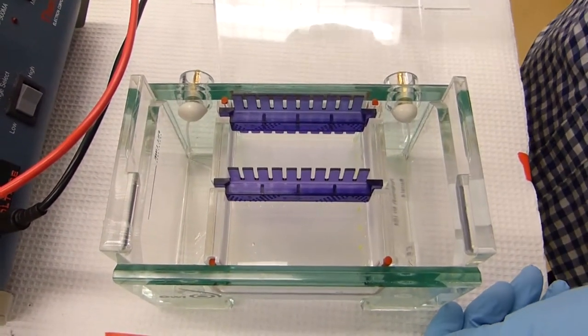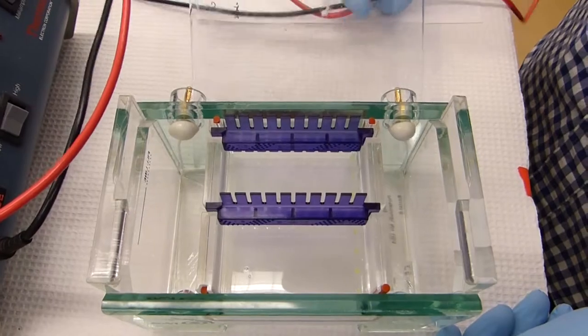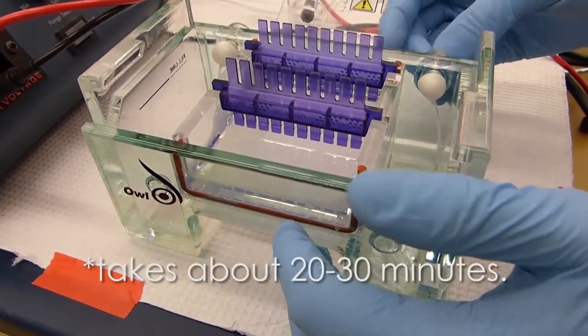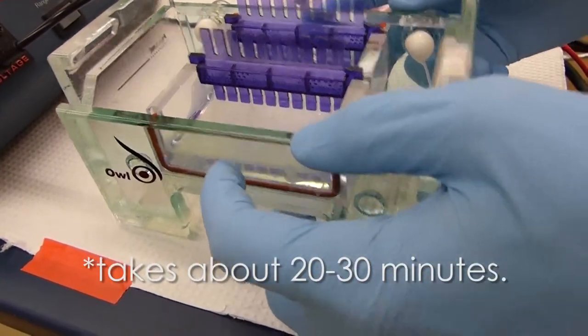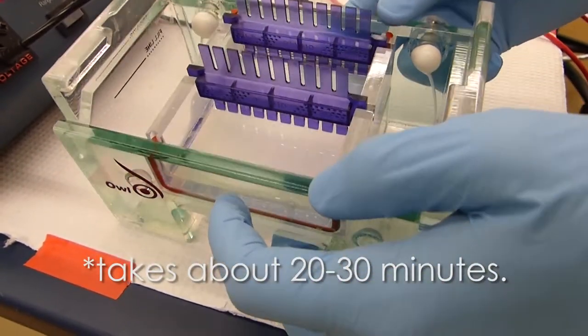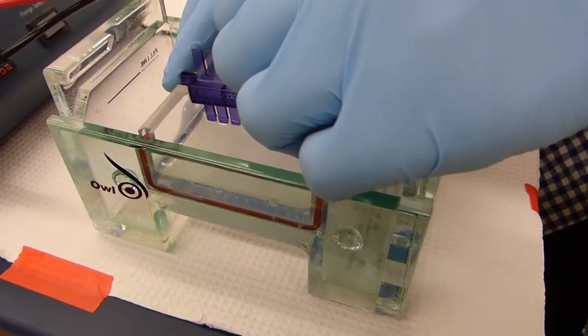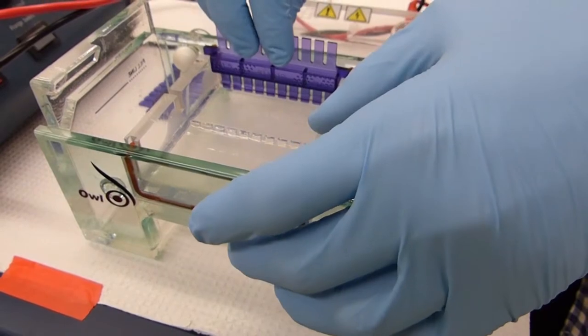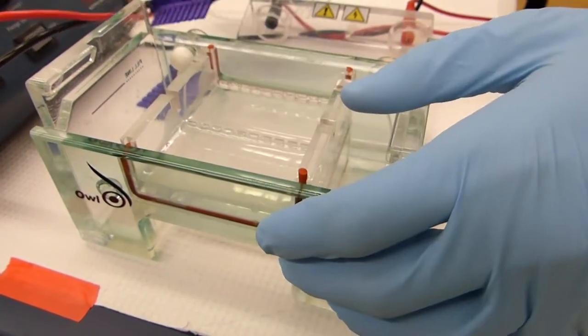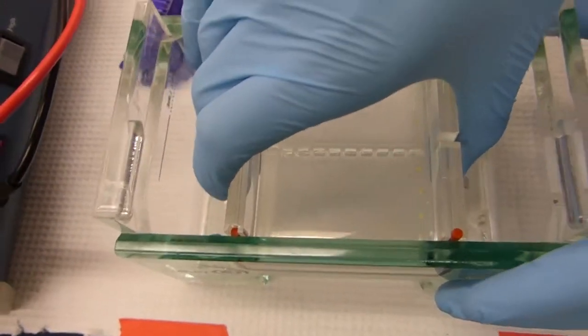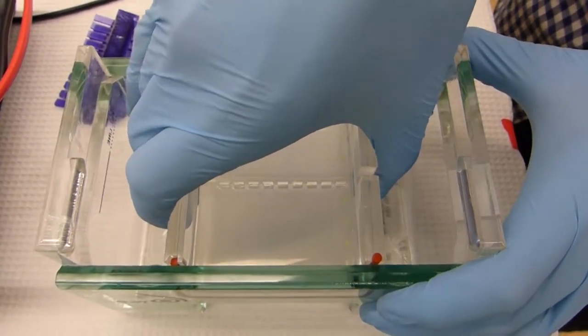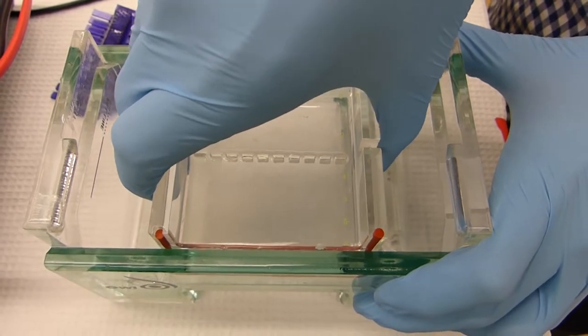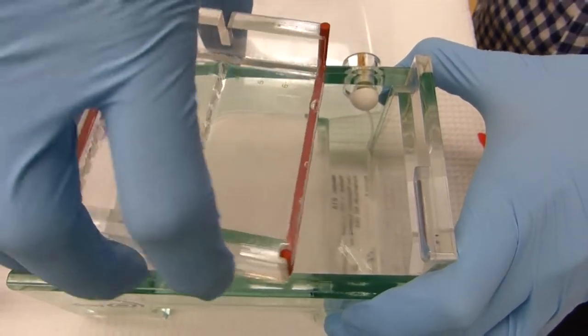After this, you let your gel harden and then you can go get your samples during this time. When the gel is done or appears to be done, to check this you can tap the sides and then tilt a little bit to make sure it doesn't move. You can slide out the combs carefully, place them to the side, and then pick up the gel and turn it.